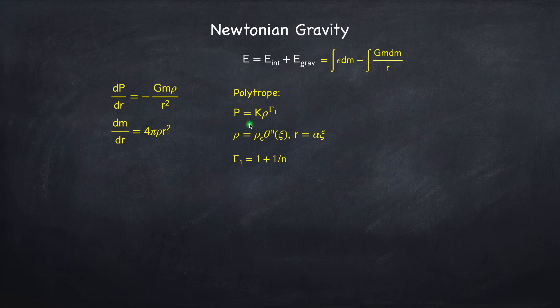We assume that the density could be written as the central density times some function theta raised to a number n, which we call the polytrope index. n can be any number. And we write the radial position as some constant times a function xi. So theta is a function of xi. Xi is basically a proxy for the radial position.